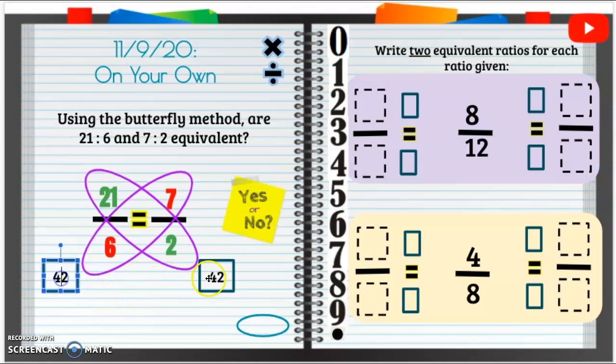Are these two numbers the same, 42 and 42? Yes they are. So that means these ratios are equivalent or equal. So our answer is yes here.